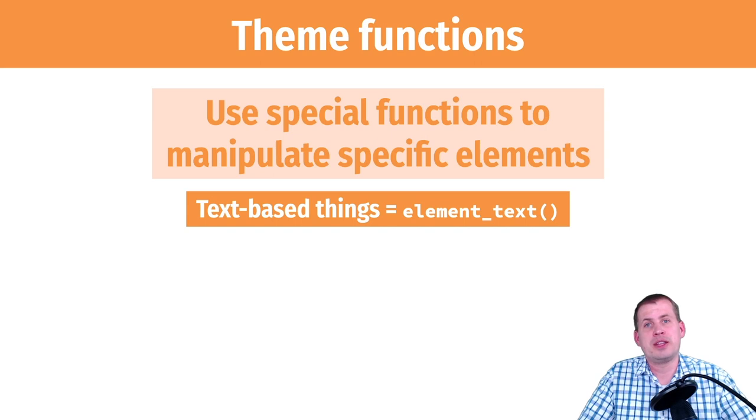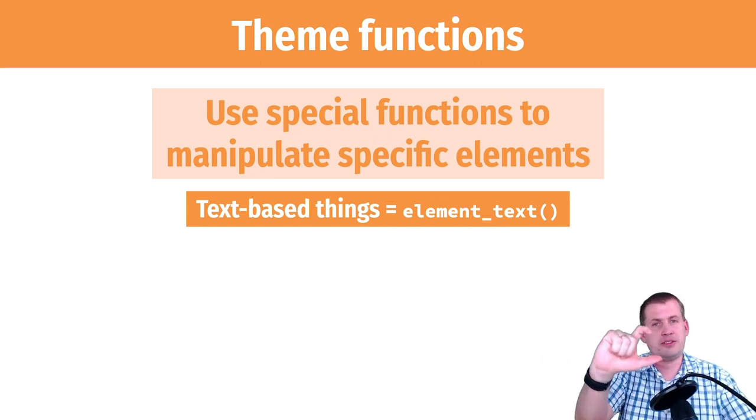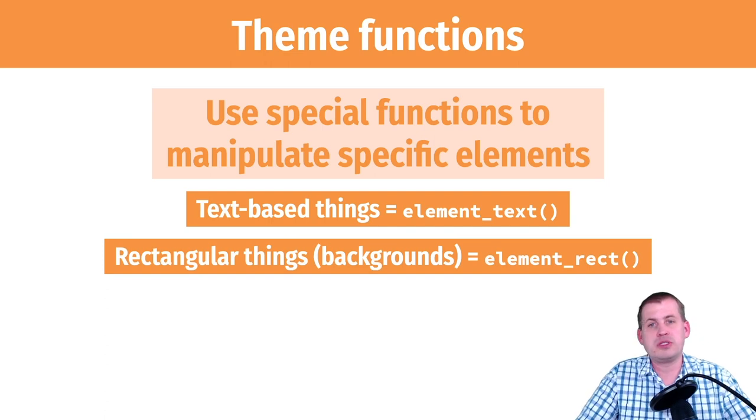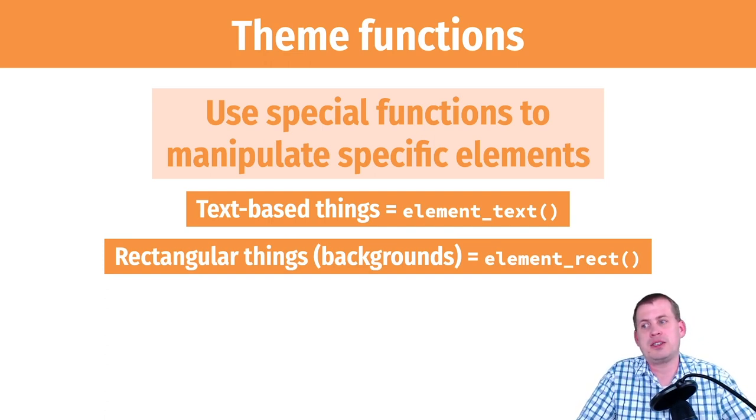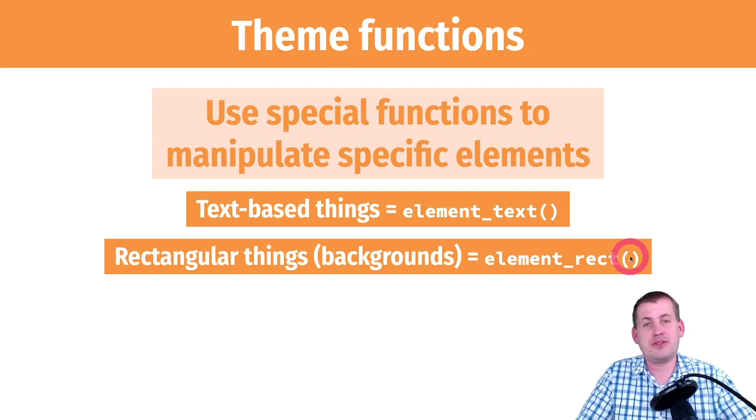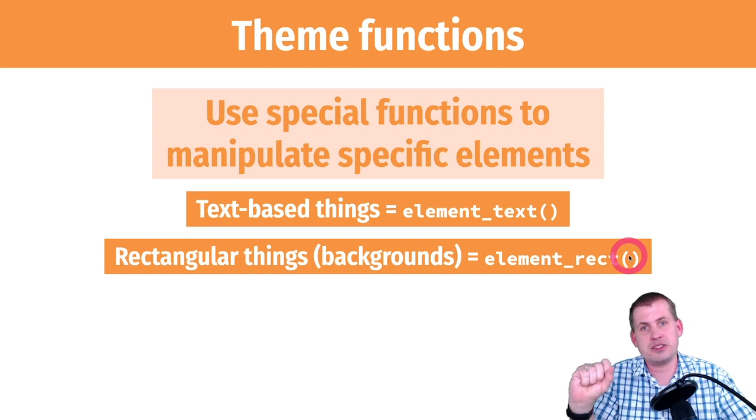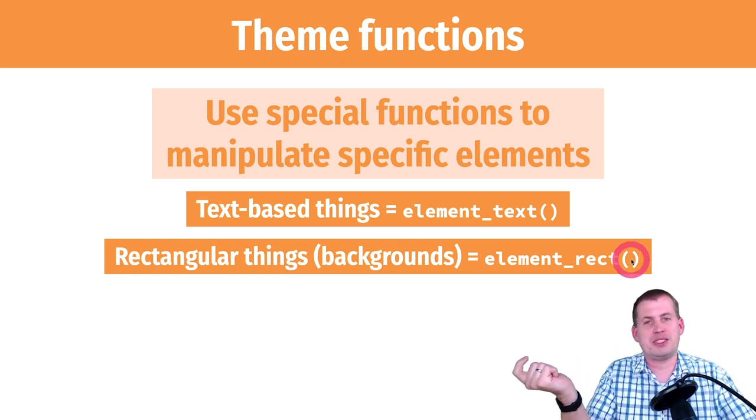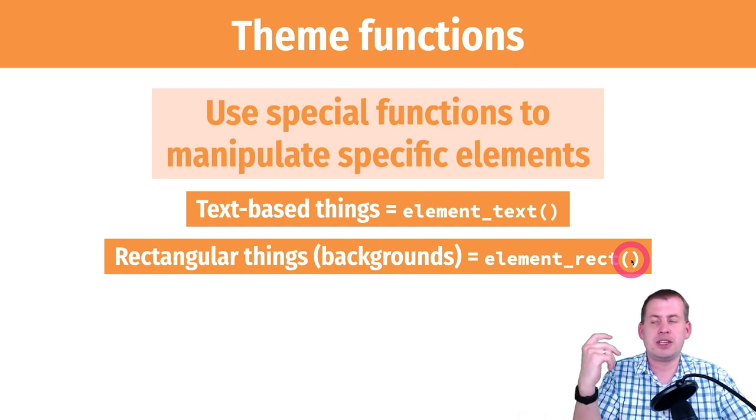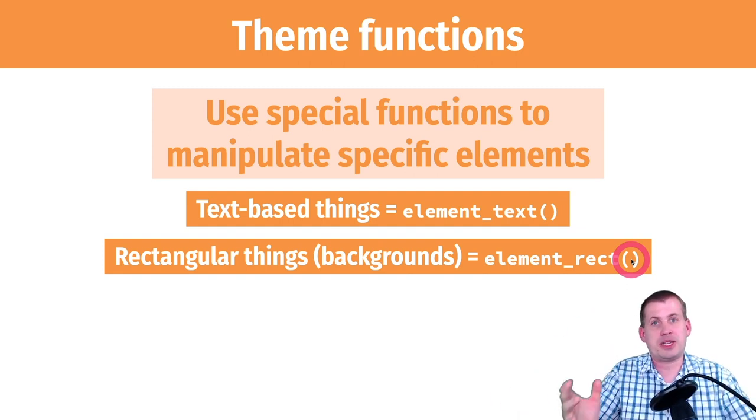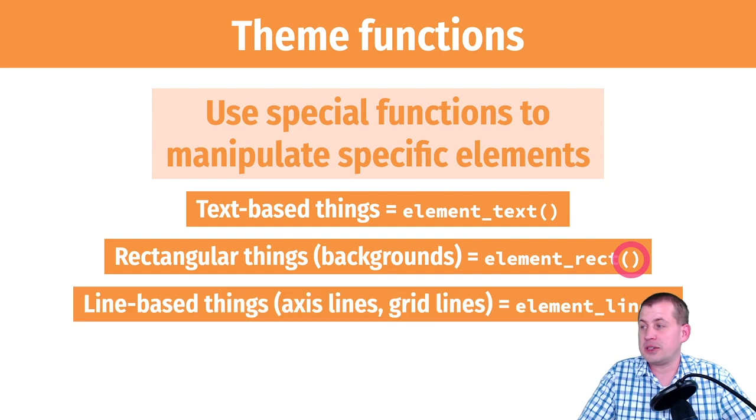If there's something on the plot that looks like a rectangle, like the box around the legend, the box around the whole plot, or the box around different panels, you use the function element_rect for rectangle. Here you can set specific fills, the color of the border, the border size. You can have a really thick border or a thin border, make it dotted or dashed instead of solid.